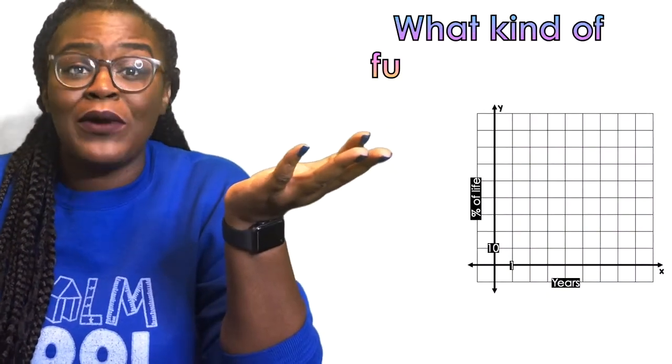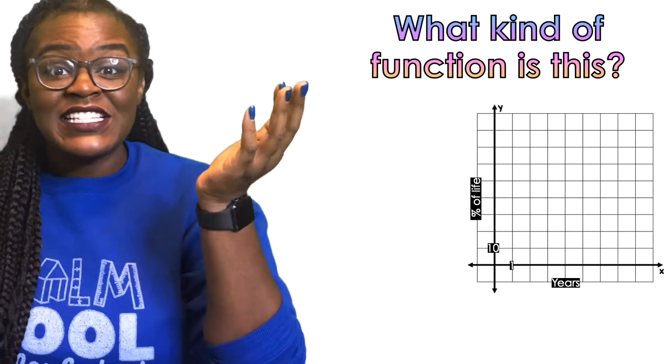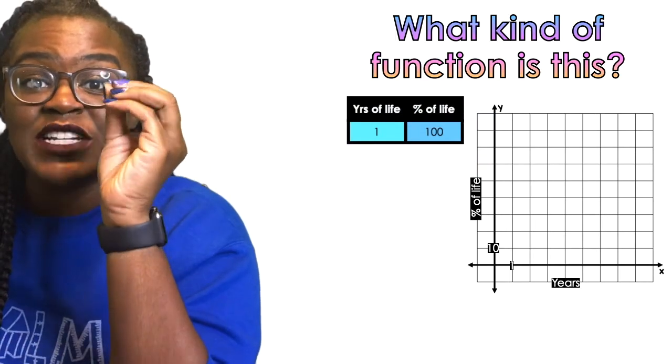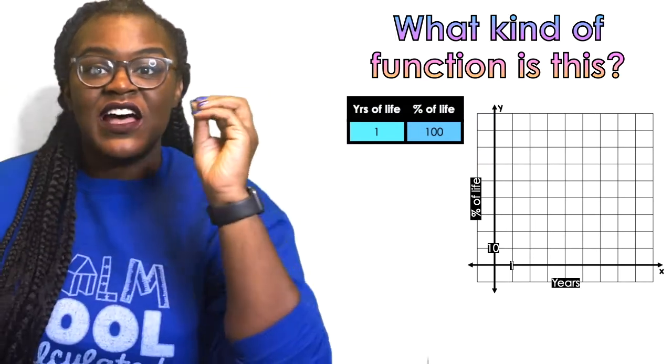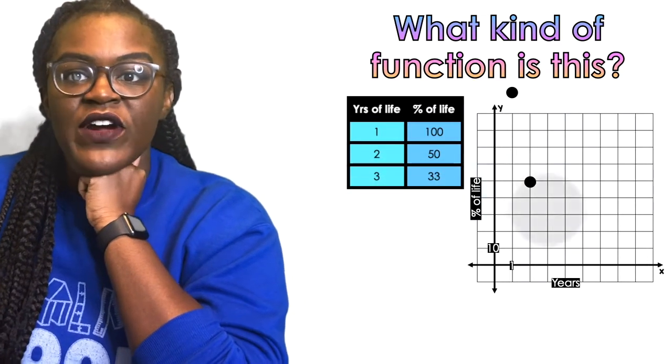What kind of function is this? You didn't think I was gonna let you guys walk away from here without figuring out what kind of function this was, okay? Let's look at our table. There's the years of our life according to how much percent of your life it represents. One year is 100%. Two years, 50%. Three years, 33%. Four years, 25%.